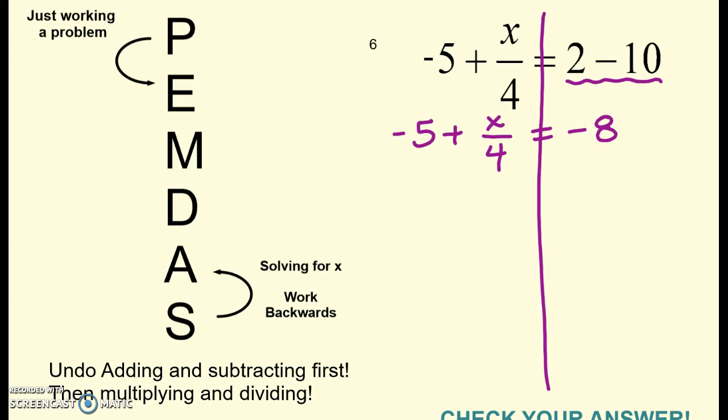So undo adding and subtracting first. Let's find our variable. This is what we're trying to get by itself. I can tell right now that I am putting a negative 5 with it right here. So the inverse of that is to add 5. That will cancel out the negative 5. Whatever I do to one side, I have to do to the other side. Actually cross out what cancels. x divided by 4 is what's left here. And then on the right-hand side, negative 8 plus 5 makes negative 3.